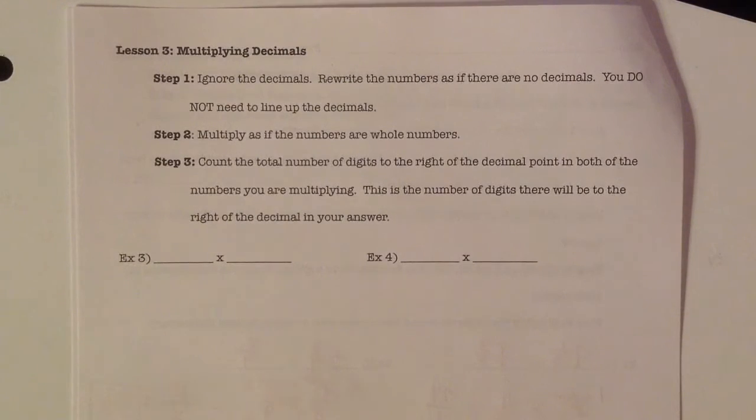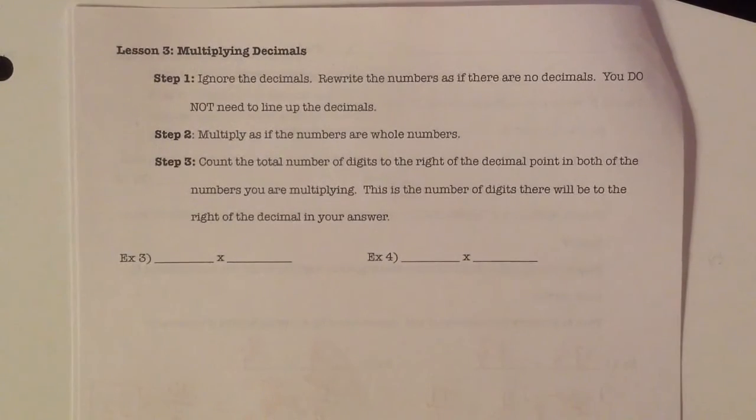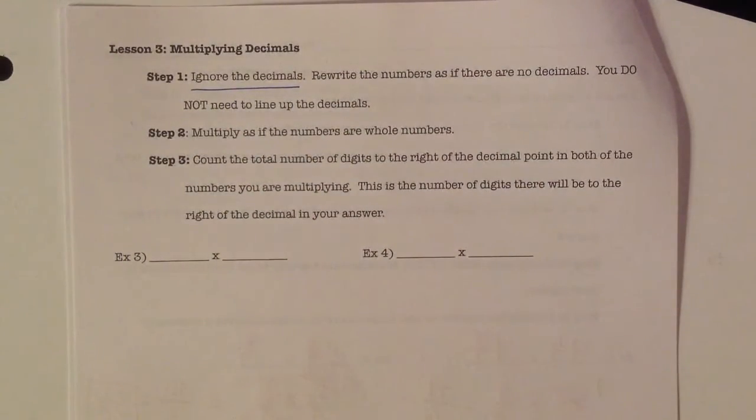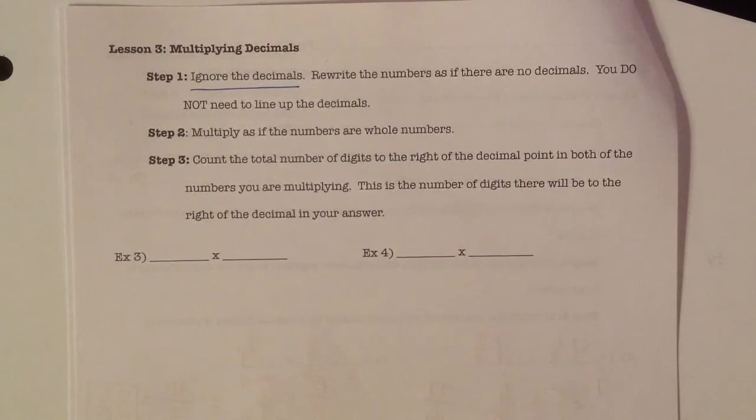Lesson 3, we're talking about multiplying decimals. So let's go over the steps first. The first step is the most important step, that we are ignoring the decimals. So we don't need to line up the decimals like you would for adding and subtracting. That actually can work but it makes it a lot more difficult and a lot more room for errors. So we ignore the decimals and we're going to rewrite the numbers as if there's no decimals.